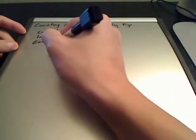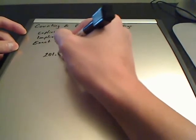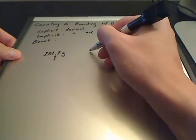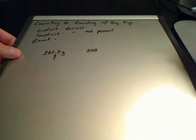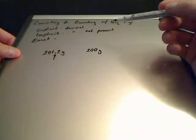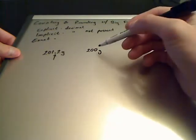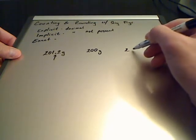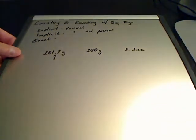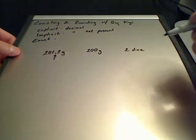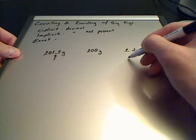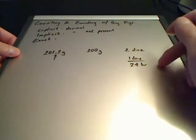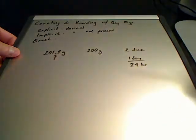I'll give you an example of each. An explicit would be anything like 201.2 grams — you see the decimal present, therefore it's explicit. An example of implicit would be 200 grams; that's implicit because the decimal is not present but is implied after the second zero. And finally, exact would be something like two dice — it's a count — or a conversion factor like one day over 24 hours. Those would be exact.